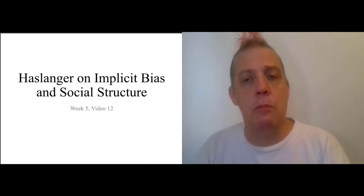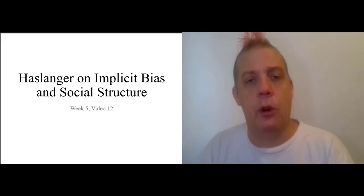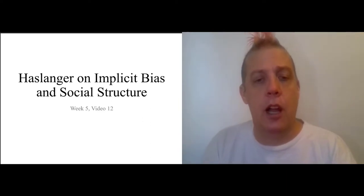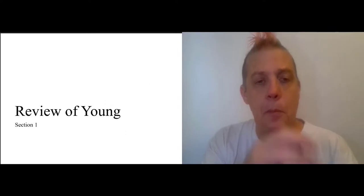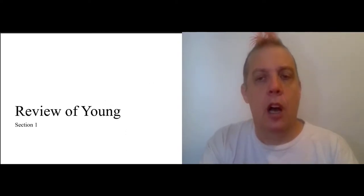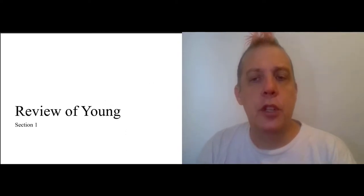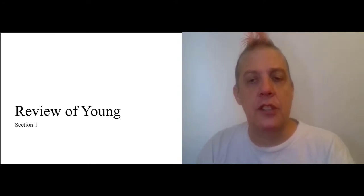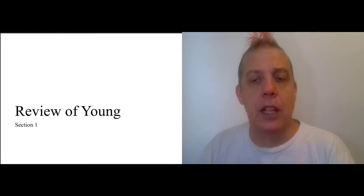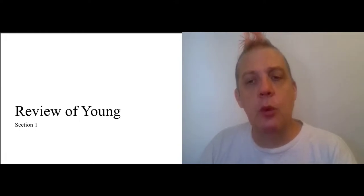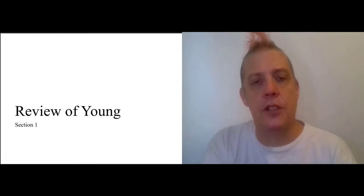I want to start by reviewing some of what's going on in Young, and then we'll talk about Haslinger. In week two we read 'Political Responsibility and Structural Injustice' — that's the one that began with the story of someone being evicted. And then last week we read 'Five Faces of Oppression.'